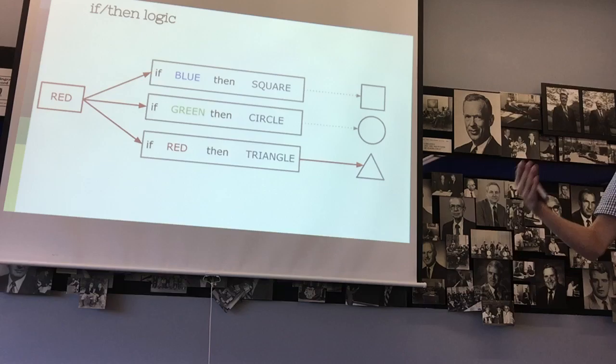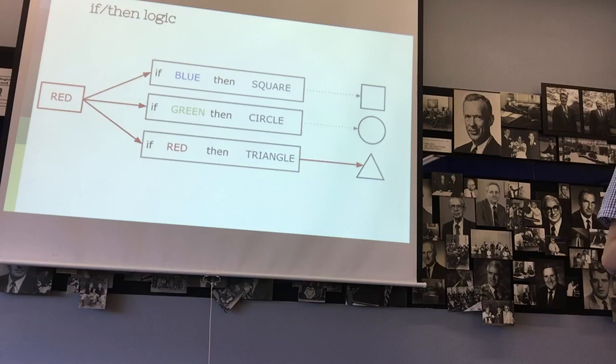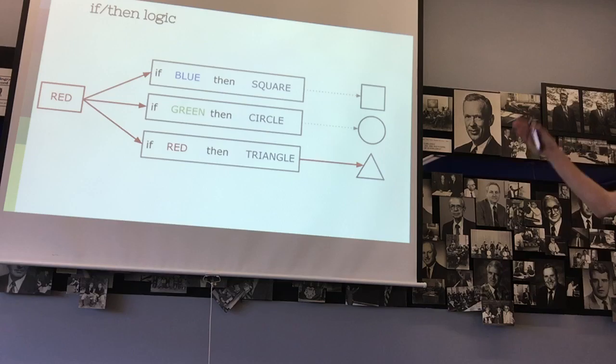And the program would have to go through and enter all of these different clauses. And, while it may seem pretty straightforward for these three cases, when you have something like Go, where it has 2.082 times 10 to 170th possible board positions, going in and entering what to do for each of those board positions is not feasible. So, here you can see if red is passed into the program, it goes through and then it would output triangle.